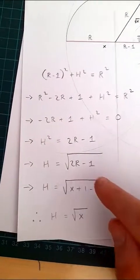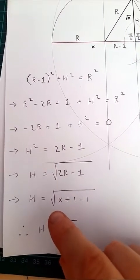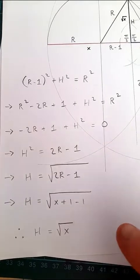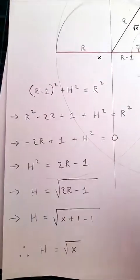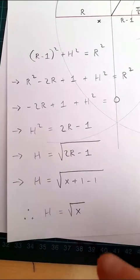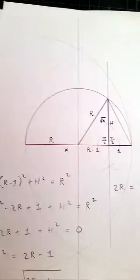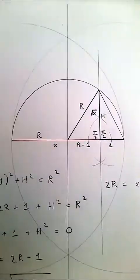If we plug it back into this equation over here, what we get is h is equal to the square root of x plus 1 minus 1. And that leaves us with h is equal to the square root of x. So, we've shown, using geometry and algebra,